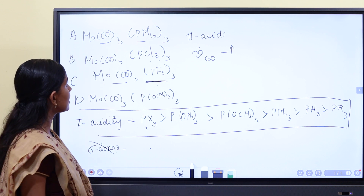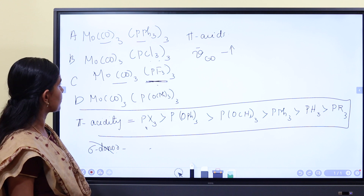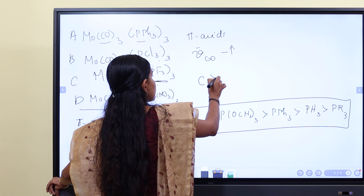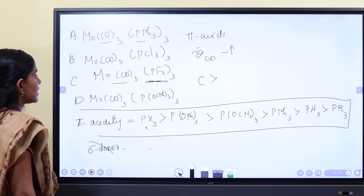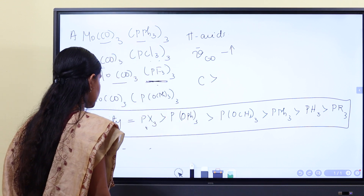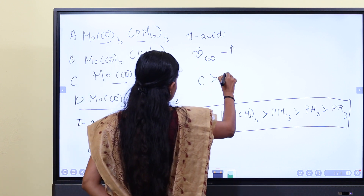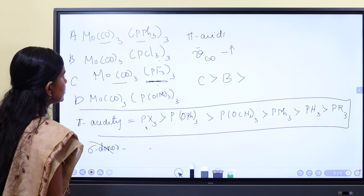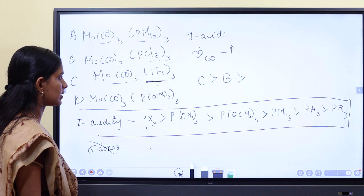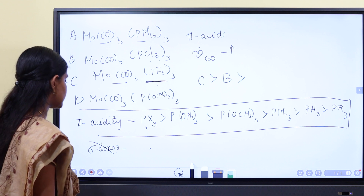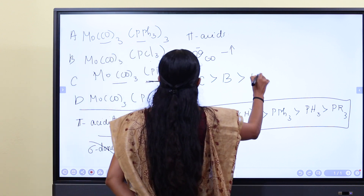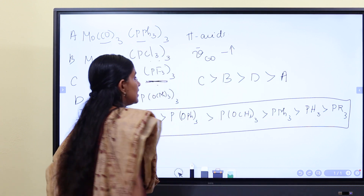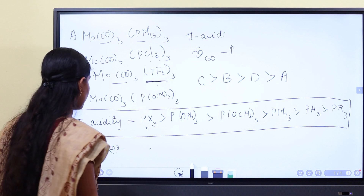The more pi-acidic the ligand, the higher the ν̃CO. PCl3 gives a slightly lower frequency than PF3. P(OPh)3 gives an even lower frequency. PMe3, being the strongest donor and weakest pi-acceptor, gives the lowest CO stretching frequency.